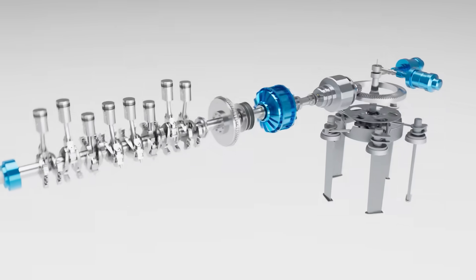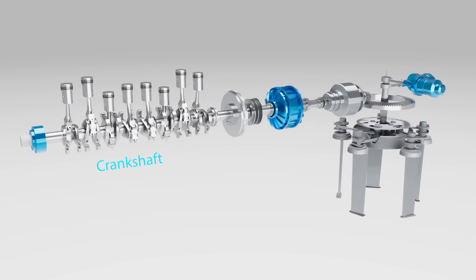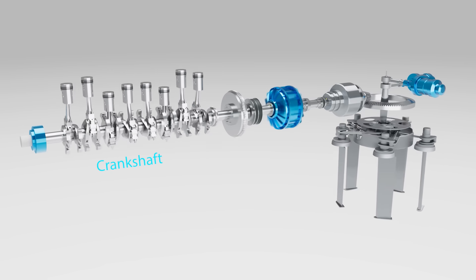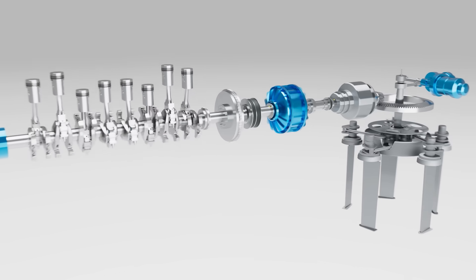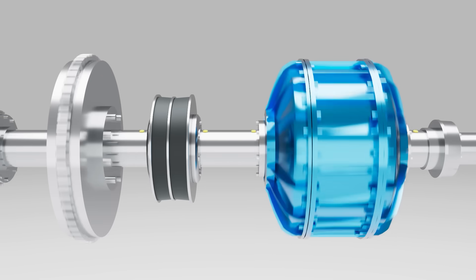The crankshaft is the first component to generate torque transferring it toward the propeller. Between the crankshaft and the propeller, there are two important devices, an elastic coupling and a fluid coupling.